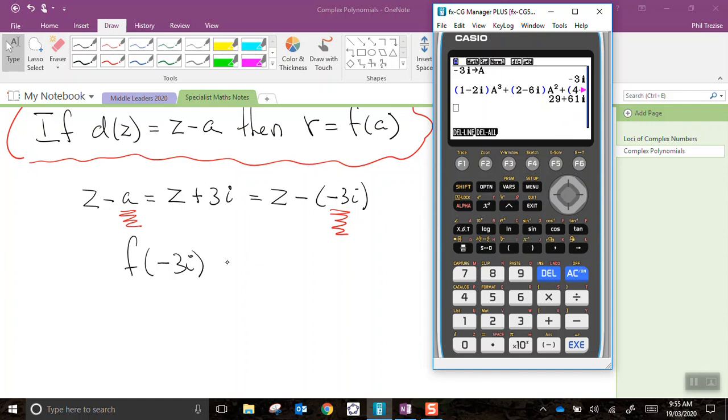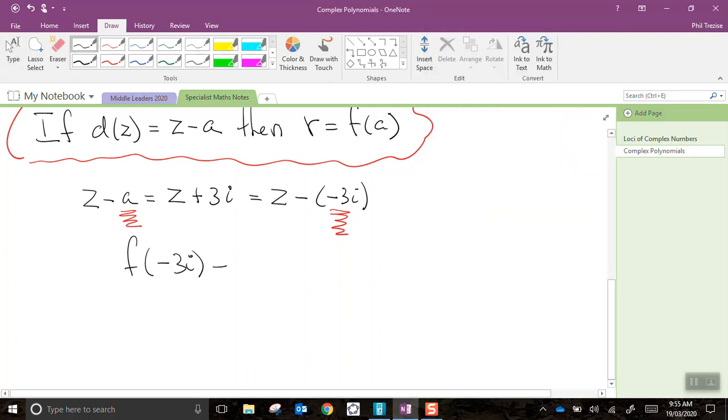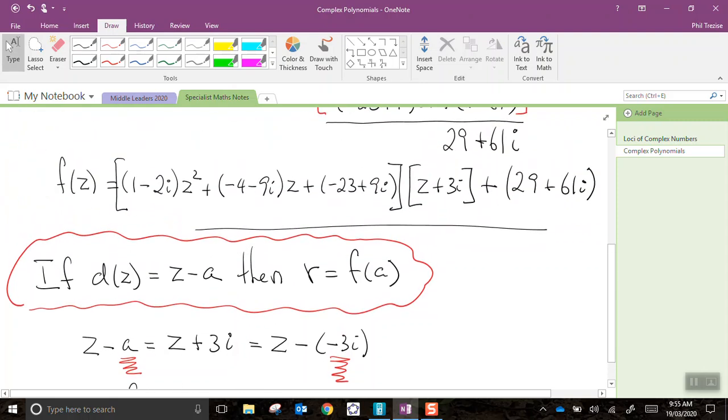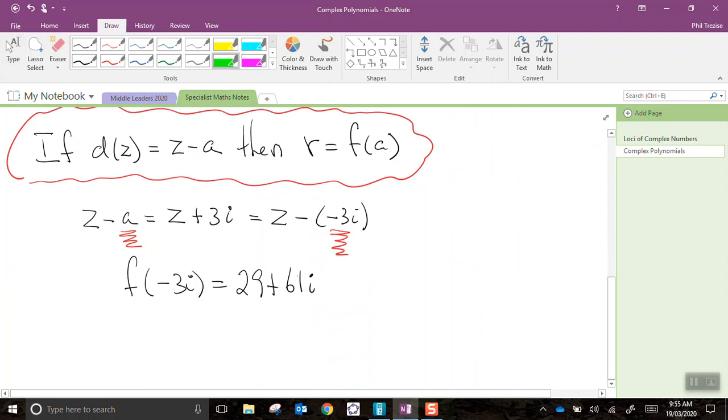And then we get 29 plus 61i. This evaluates to be 29 plus 61i. And is that the remainder we found? Yes, it is.